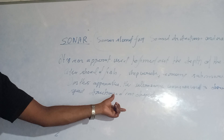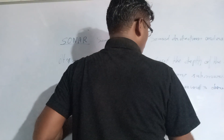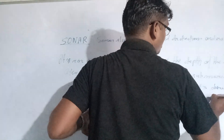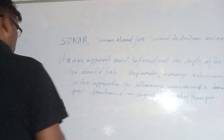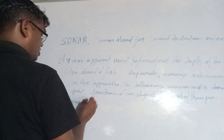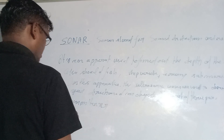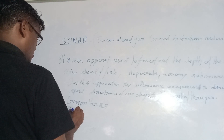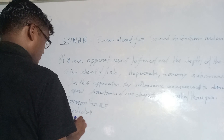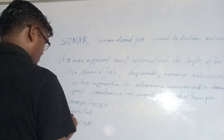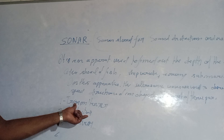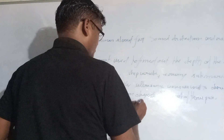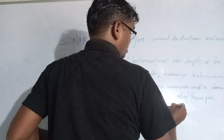SONAR consists of three parts. The first is the transmitter, the second is the detector, and the third is the receiver. The role of the transmitter is to produce ultrasonic waves into the sea.